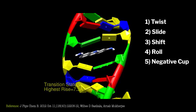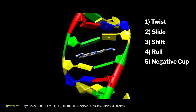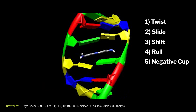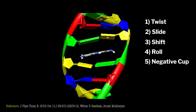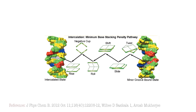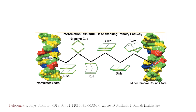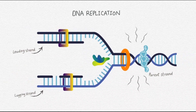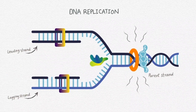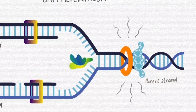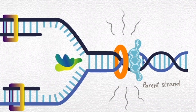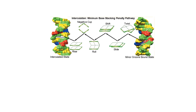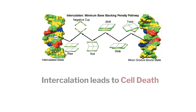Once inside the cavity created within the base layer, the bases buckle around the proflavin and rise to adjust the space. This intercalated DNA is entirely different from the original DNA. Due to the presence of this external component, proflavin, the DNA is unable to replicate, leading to the cell's death. This whole process occurs within a millisecond.